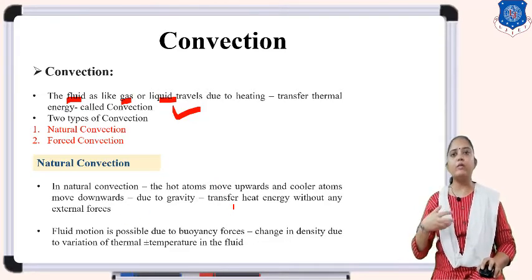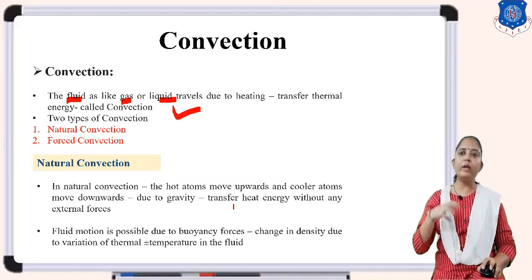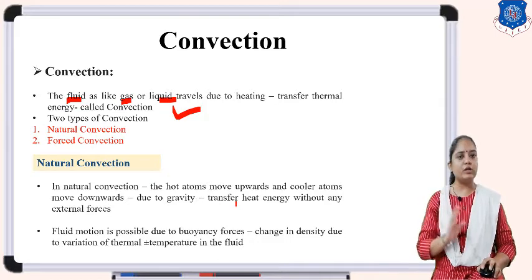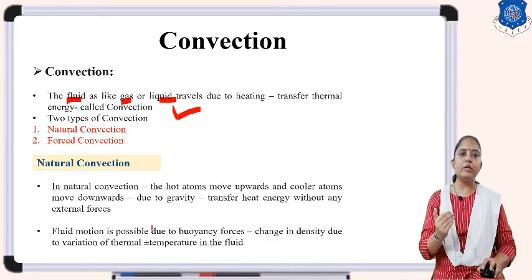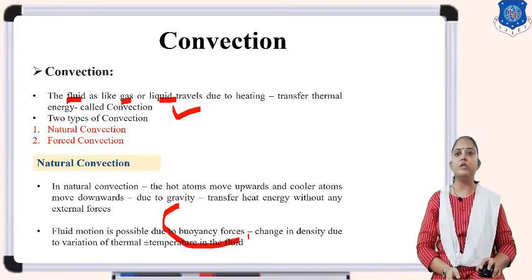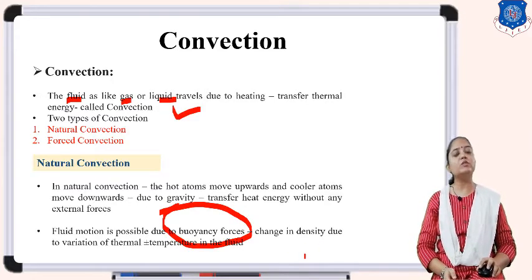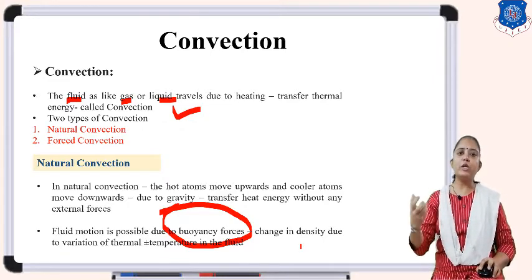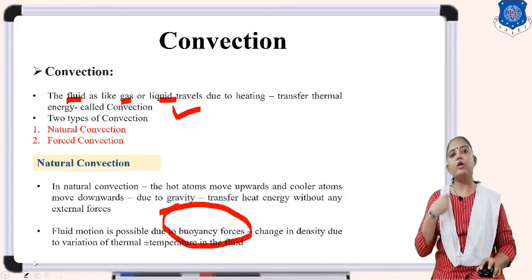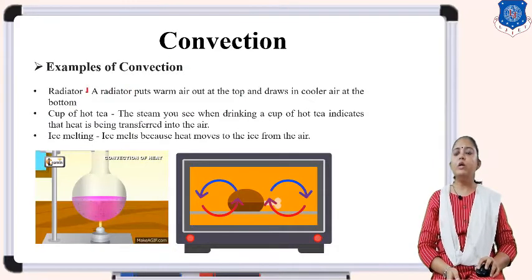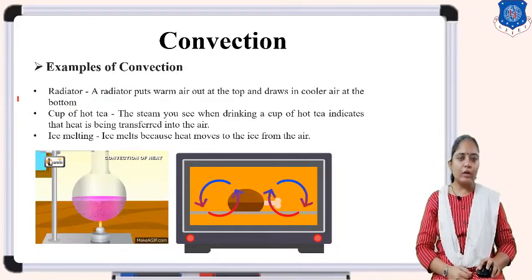In natural convection, hot atoms move upward and cooler atoms move downward due to gravity, without any external force, and heat energy transfers from one molecule to another. This process occurs due to the buoyancy mechanism which we studied in fluid mechanics. It also involves a change in density due to variation in temperature in the fluid. This is natural convection.